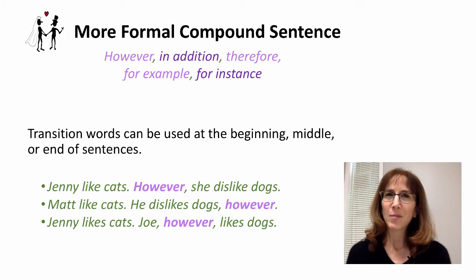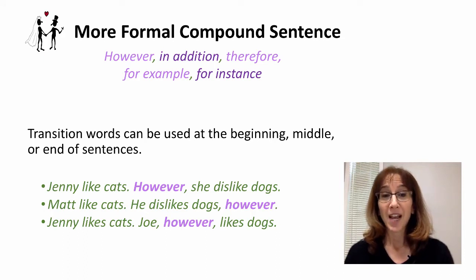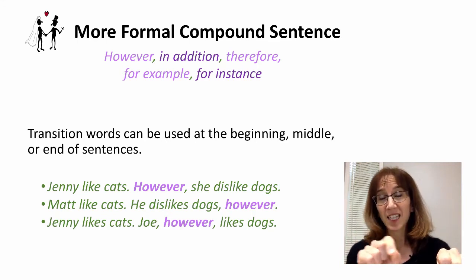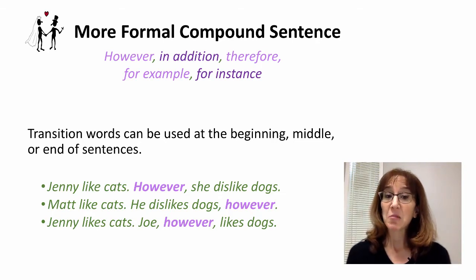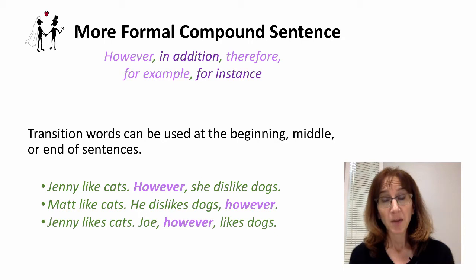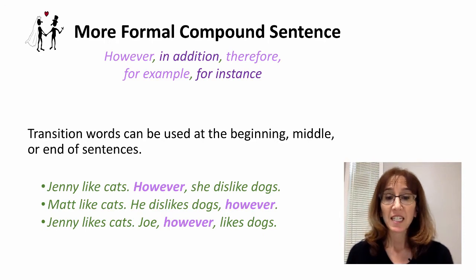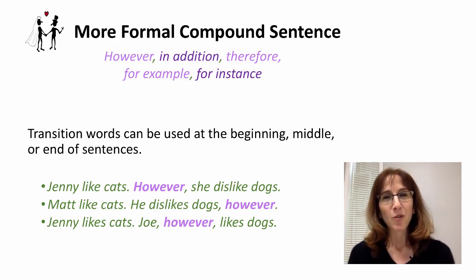That's very similar to the less formal compound, where you have an independent clause and an independent clause with a connecting word in between. For example, 'He dislikes dogs, however.' — that shows the transition word at the end of a sentence. Or: 'Jenny likes cats. Joe, however, likes dogs.' — showing different ways we can use transition words.